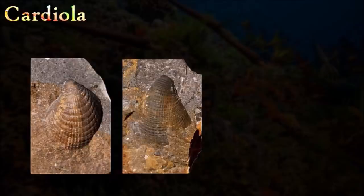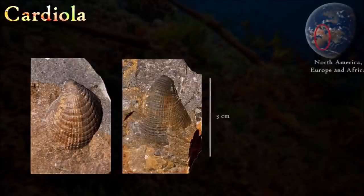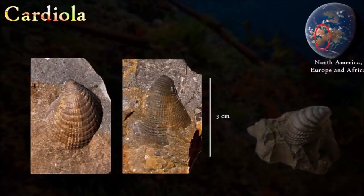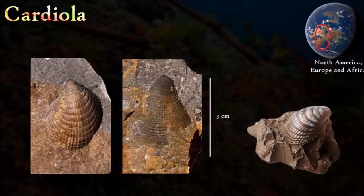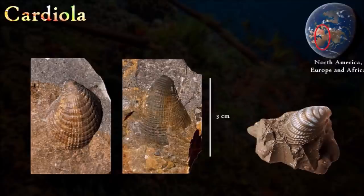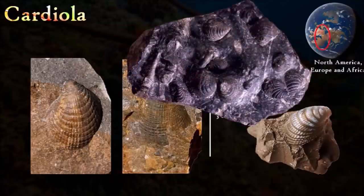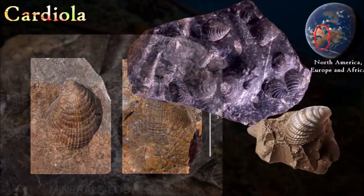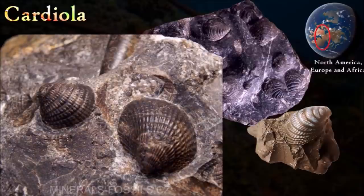Cardiola was a strongly ribbed bivalve with well-marked growth rings. The shells were of equal size with prominent beaks; a smooth triangular area lay beneath each beak, with fine growth-parallel ribs across it. Internally, two adductor muscles controlled closure of the valves, but there were no hinge teeth. A ligament would have opened the valves when the adductor muscles relaxed. Cardiola was probably attached to the seabed by threads known as byssus, which it retained from its initial settling as a larva.